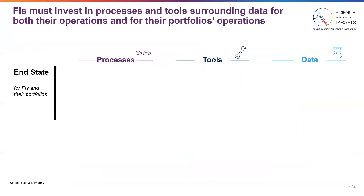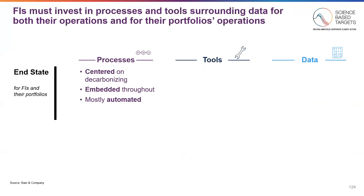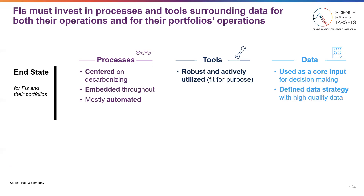Tactically, to take action, we believe that financial institutions can hone in on processes, tools, and data in order to address some of the current challenges — for both financial institutions as well as their portfolio companies and clients. The end state will look like processes centered around decarbonization, such as renewing intake processes for clients or embedding emissions into KPIs for portfolio companies. These processes should be embedded throughout the business and ideally automated, especially in the end state. To implement these processes, companies need the right tools. This sector is actively growing, and in the end state, we envision a robust and actively utilized set of tools around decarbonization and tracking emissions data. Lastly, we envision that data becomes a core input to decision-making, backed by a data strategy with high-quality emissions data at its center.